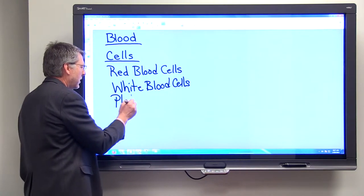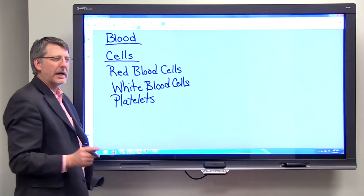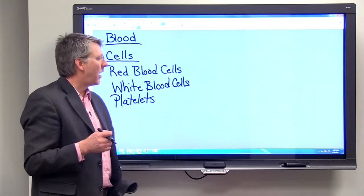And then there are platelets, which are called thrombocytes, and they're really little slivers of cells. They do not even have a nucleus.